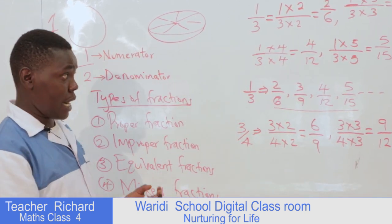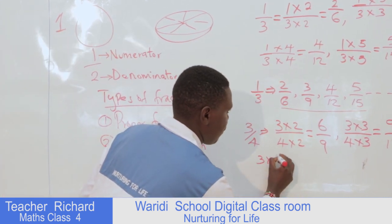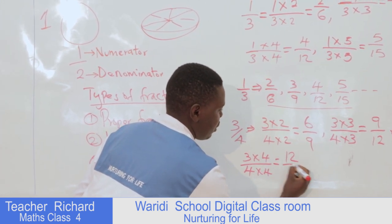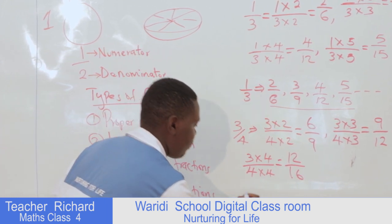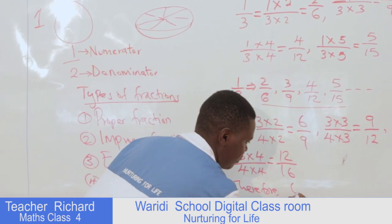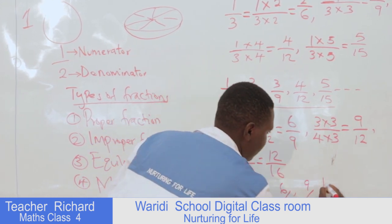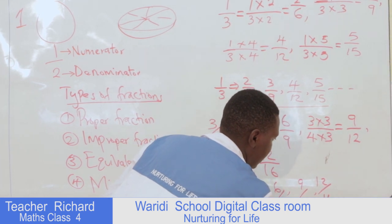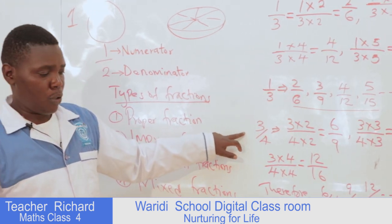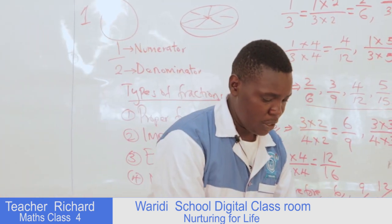I can also continue: three times four over four times four — I'm going to get twelve over sixteen. Therefore, six over eight, nine over twelve, and twelve over sixteen — and the thread continues — are equivalent fractions to three over four, which was our example. You can also look for other examples and do the same.